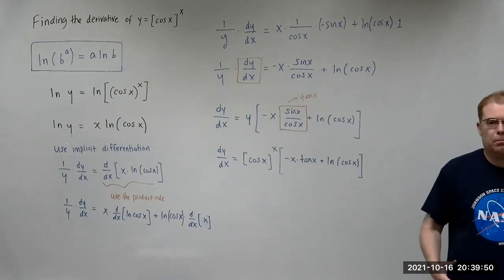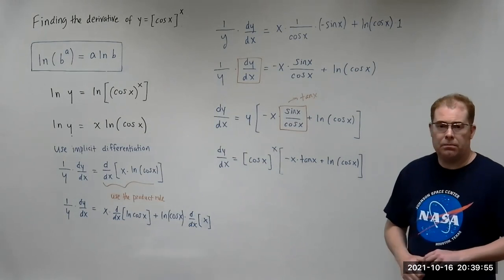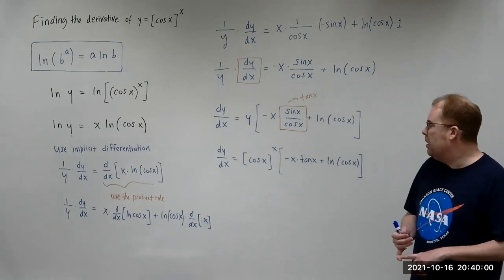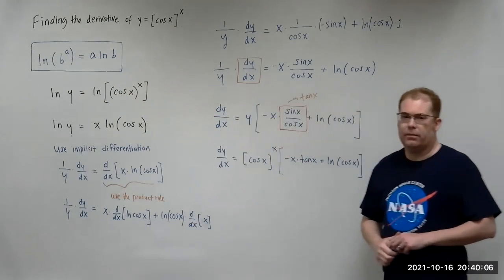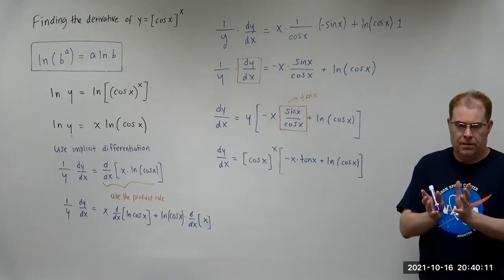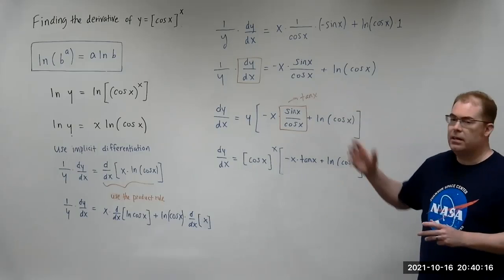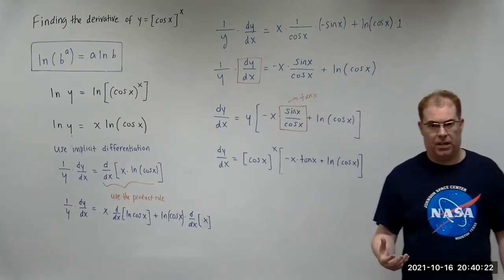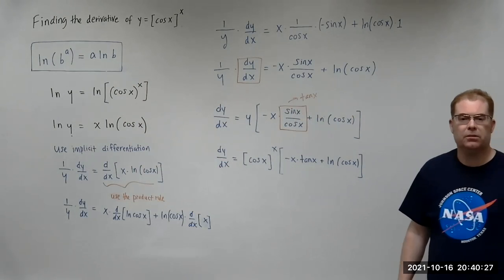So the key to this problem is the log identity in the box. Anytime you have a function raised to another function, you apply this rule: take the natural log of both sides, bring x in front of the natural log, use implicit differentiation with the product rule, multiply both sides by y, then substitute back. Math is a cumulative subject — a lot of calculus goes back to ideas from trig and algebra.